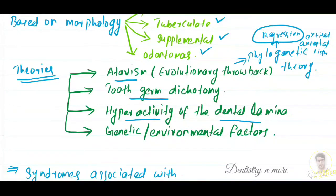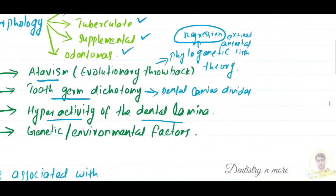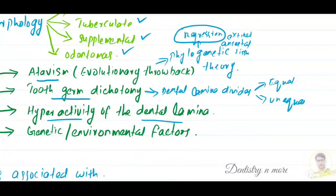The second theory is tooth germ dichotomy. This theory says that the splitting of the tooth germ happens during early tooth development — the dental lamina divides into two parts, sometimes equally and sometimes unequally. If the division is equal, a supplemental tooth of the same size forms; if unequal, it becomes a rudimentary tooth. Twinning and germination are all related to this concept.